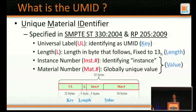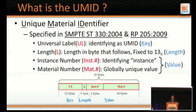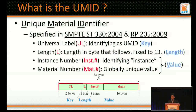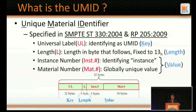So what is the UMID? UMID is an acronym for Unique Material Identifier, specified in SMPTE 330 and RP205. Based on SMPTE metadata technology, UMID takes the form of a key-length-value or KLV structure. The first 12-byte key corresponds to the universal label indicating this is a UMID. Then a one-byte length field indicating the length of the value field in bytes, fixed to 0x13 in the case of UMID. In the value part, there are two components: a 3-byte instance number indicating this is an instance of AV material, and the material number providing a globally unique value.